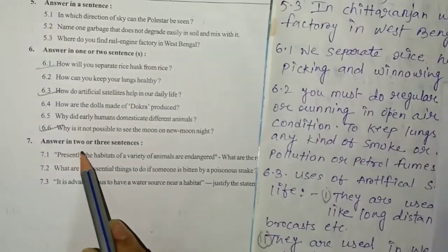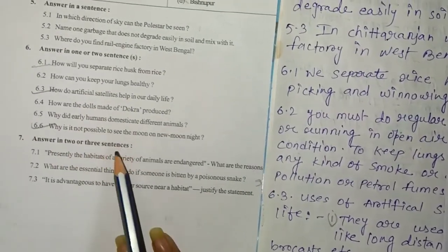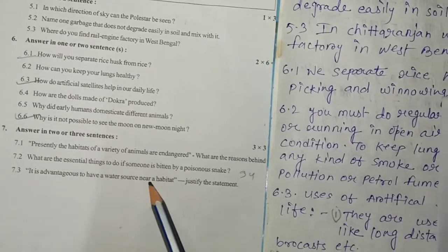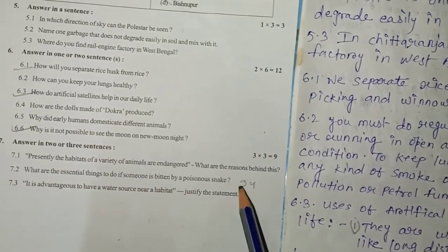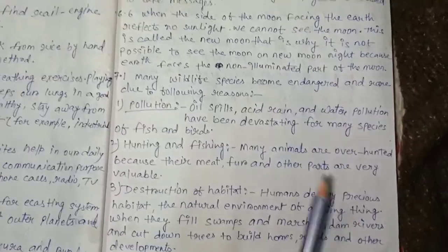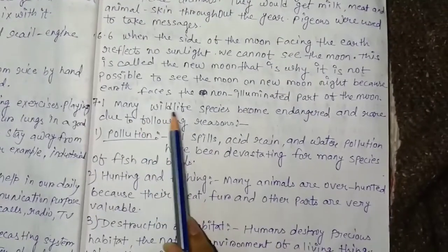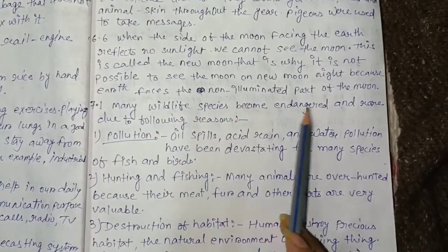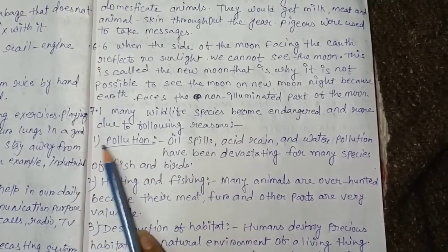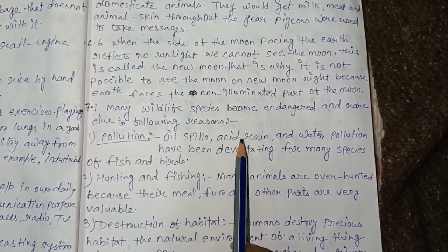Answer in two or three sentences. 7.1: Presently the habitat of a variety of animals are endangered. What are the reasons behind this?